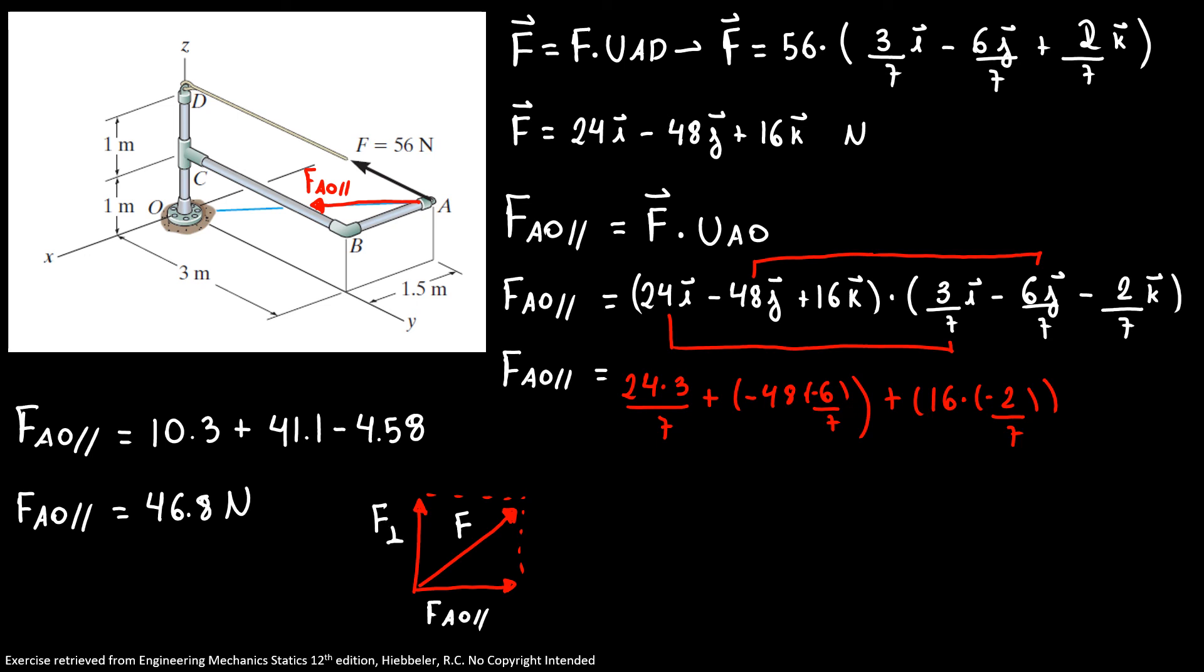We can always write force perpendicular AO squared plus force along AO squared equals my force squared. So I have my perpendicular force AO squared is equal 56 squared minus 46.8 squared. If we do our math, we're going to find force AO perpendicular is equal 30.7 newtons.